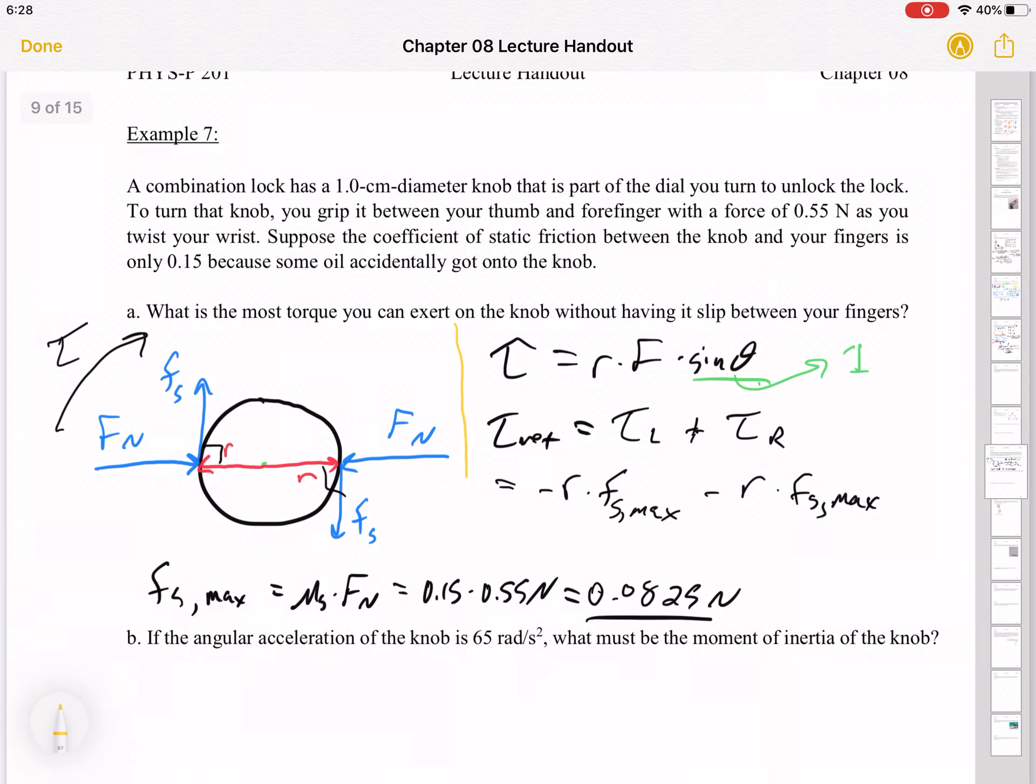And I've got minus R times Fs max. So just for clarity. So one more line here should be minus two times. R is one centimeter. That's the diameter. So R is half a centimeter. Sorry, that's a little one. And the force we just determined was 0.0825 Newtons. So if you put all that together, I get a torque of 8.25 times 10 to the minus 4.